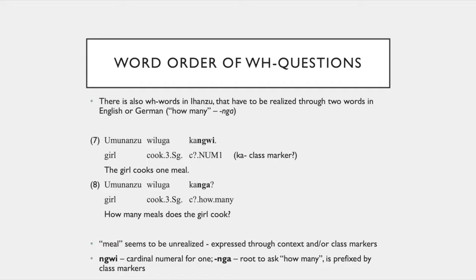There are also WH words in Ihanzu that have to be realized through two words in English or German — for example 'how many' — but in Ihanzu that works with 'nga'. So if we have 'umunansu wiluga kangwi' — 'the girl cooks one meal' — and we ask 'how many meals does the girl cook?', we get 'umunansu wiluga nga'. The meal here doesn't seem to be realized by its own word, expressed through the context of the class markers. The 'nga' at the bottom is the cardinal number for one, and when asking 'how many', it gets interchanged with 'nga' for 'how many', with the same class marker.